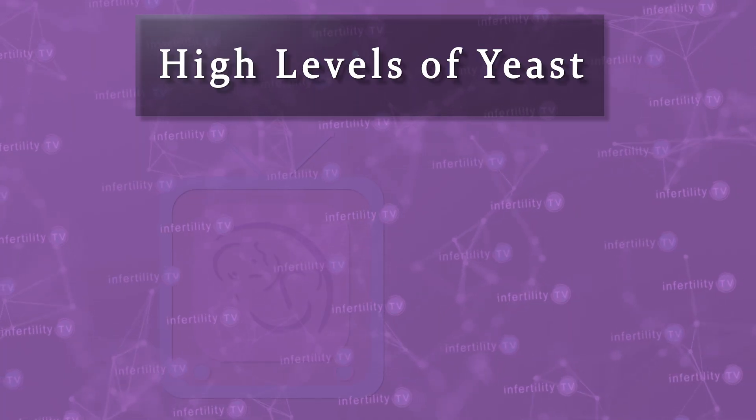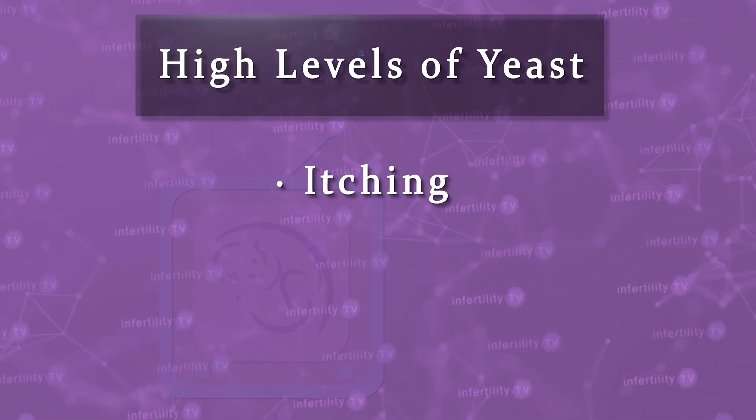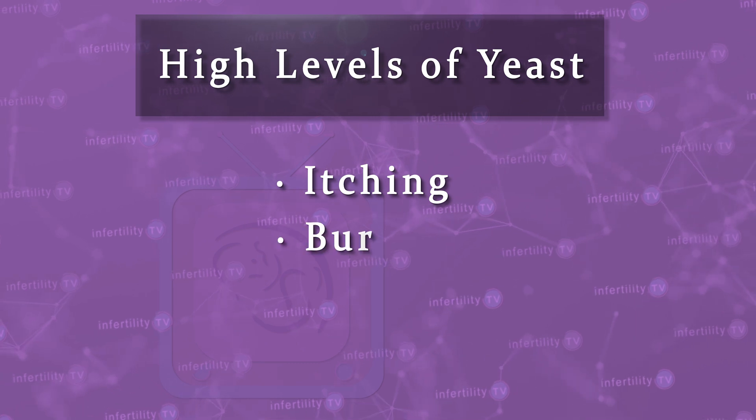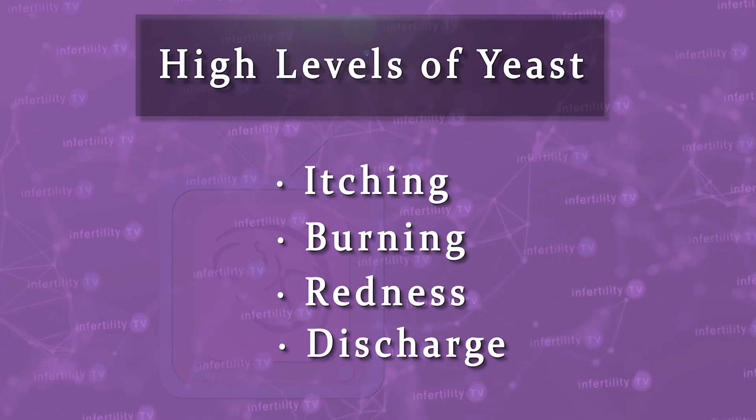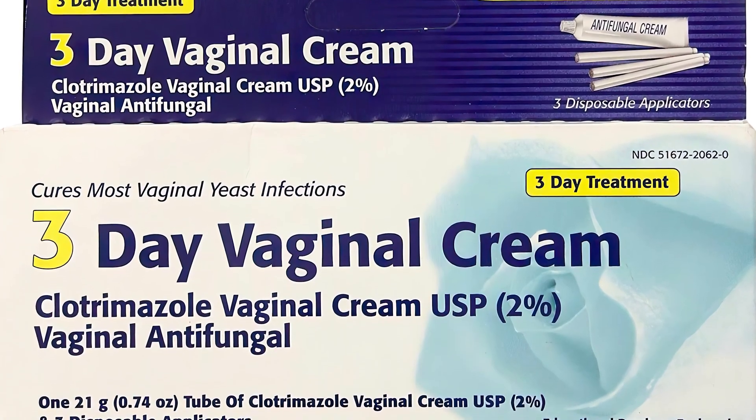When the levels of yeast are higher for any reason, this may cause symptoms such as vaginal itching, burning, redness, and discharge. This can be serious enough to require people to use treatments to lower the levels of yeast. Yeast infections do not cause infertility. However, if the symptoms are bad enough, having intercourse can be painful, so yeast might indirectly lower the chance for pregnancy by lowering the frequency of sex.